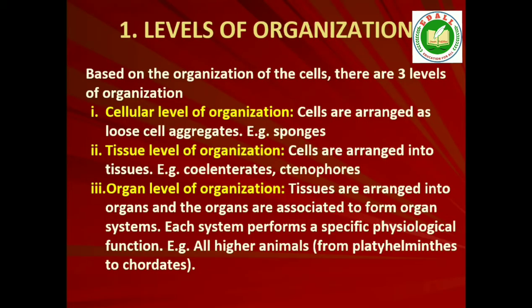1. Levels of Organization. Though all members of Animalia are multicellular, all of them do not exhibit the same pattern of organization of cells. For example, in sponges, the cells are arranged as loose cell aggregates, i.e., they exhibit cellular level of organization. Some division of labor occurs among the cells.